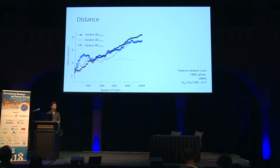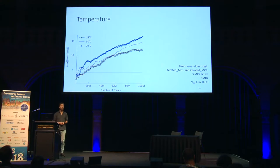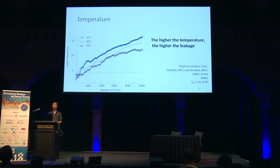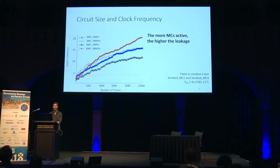For distance, we compared three first-order masked implementations between mixed columns one and two, one and three, and one and four. Surprisingly, distance does not matter much in the observed leakage. For temperature, we varied from room temperature of 21 degrees over 50 degrees up to 70 degrees, and we clearly see that the higher the temperature, the higher the leakage. For circuit size, going from three to six mixed columns, the larger the circuit, the higher the leakage.